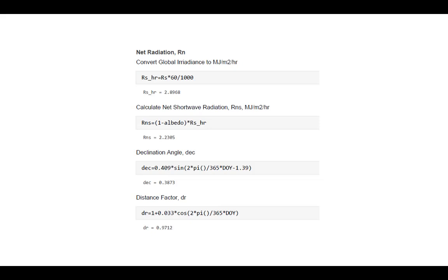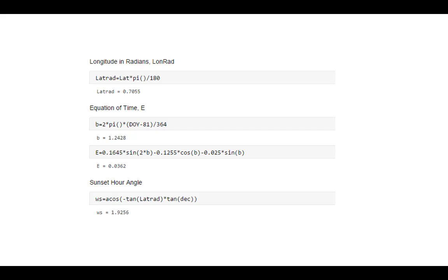Elevation, latitude and longitude. You also need the longitude of the central meridian for your time zone. That's 105 degrees for mountain time, 90 degrees for central time, for example. And you need the albedo. You could also use the leaf area index of the crop to help you estimate soil heat flux. So the first thing we need to do is get that global irradiance in the correct units, megajoules per meter squared per hour. The second calculation, we calculate the net shortwave radiation using that number and the albedo. So that's just like the daily calculation. It's 2.23. We calculate the declination angle and the distance factor.